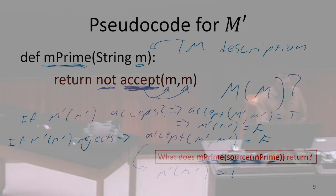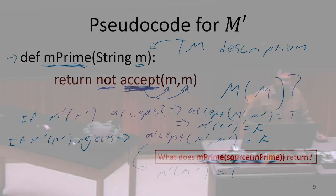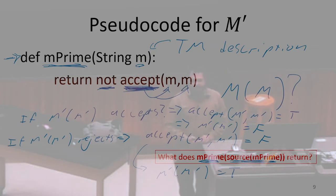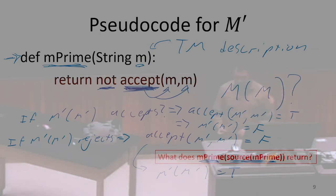So if I could write a Python program for accept, then it's totally reasonable to define this new Python program m′, which just invokes accept and returns the opposite. However, we knew that this Python program m′ could not exist, because then the universe doesn't make sense. So it must have been that accept couldn't exist. This theorem is useful in the sense that we now know that asking this question — does this Python program accept this input — in the general case, just can't really work. It can never work.